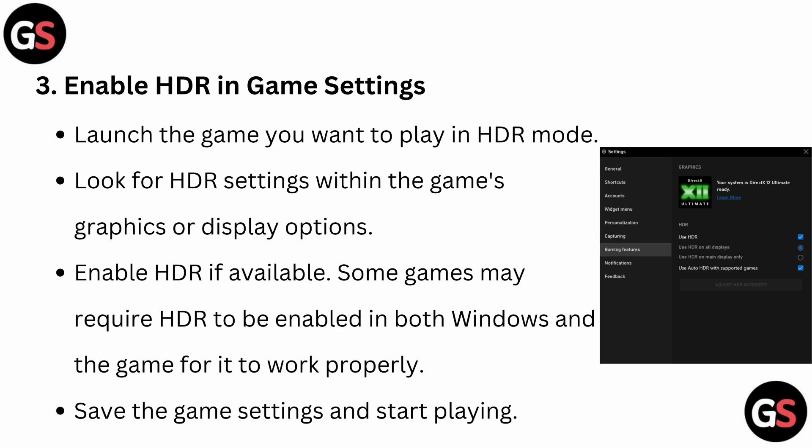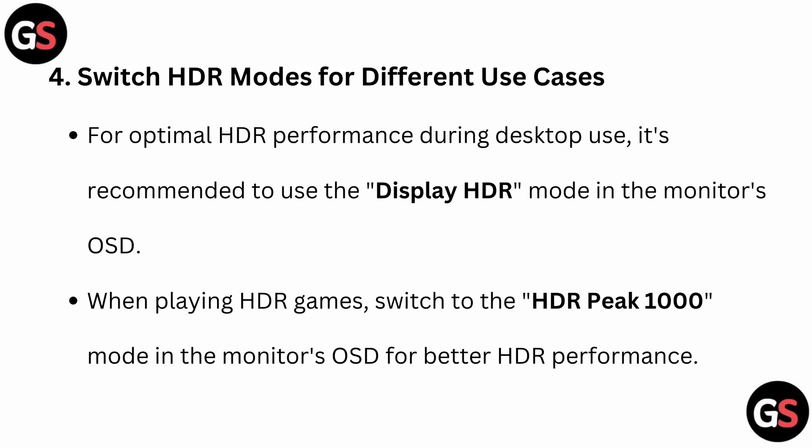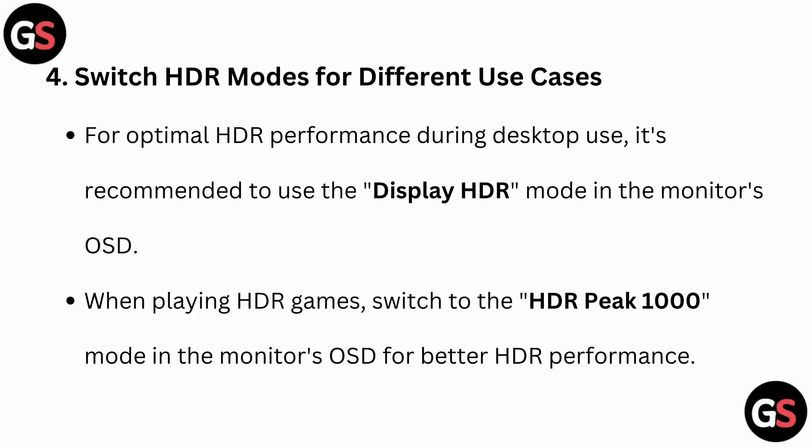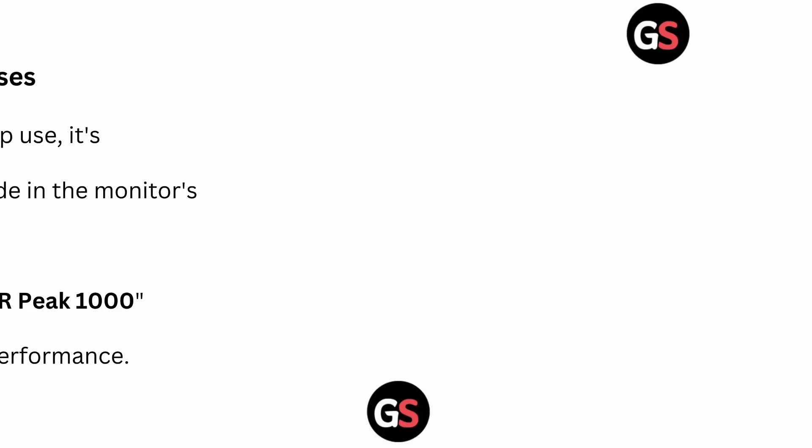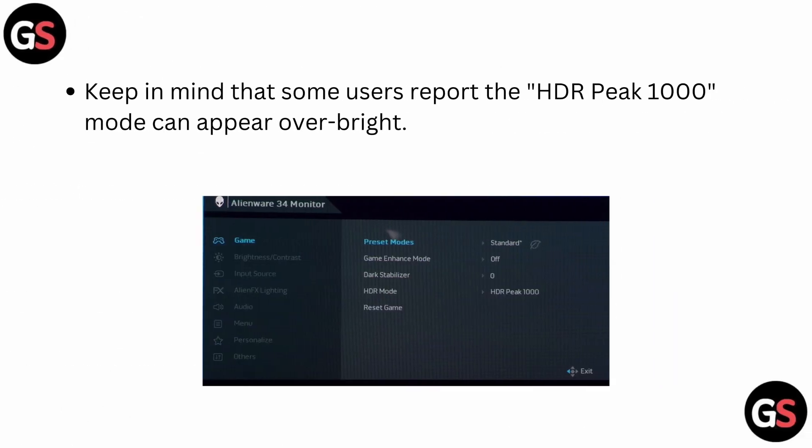Step 4: Switch HDR modes for different use cases. For optimal HDR performance during desktop use, it's recommended to use the Display HDR mode in the monitor OSD. When playing HDR games, switch to the HDR Peak 1000 mode in the monitor OSD for better HDR performance. Keep in mind that some users report the HDR Peak 1000 mode can appear over-bright.